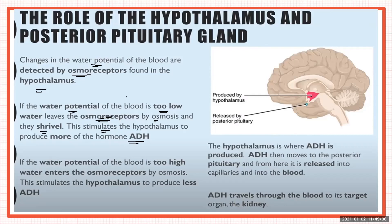When the water potential of the blood is too low, the osmoreceptors in the hypothalamus shrink because water leaves them by osmosis, stimulating the hypothalamus to produce more antidiuretic hormone. Alternatively, if the water potential of the blood is too high, water enters the osmoreceptors by osmosis, they swell and increase in size, and the hypothalamus detects this and produces less antidiuretic hormone.